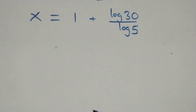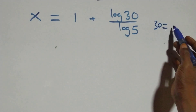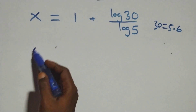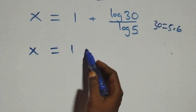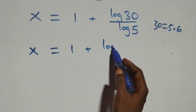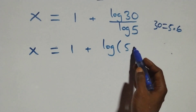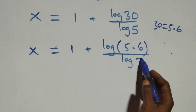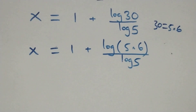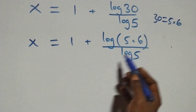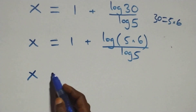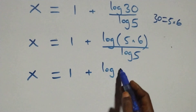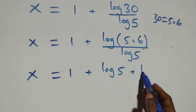Next, 30 can be expressed as 5 times 6. So what we have becomes x equals 1 plus log(5 times 6) over log 5.